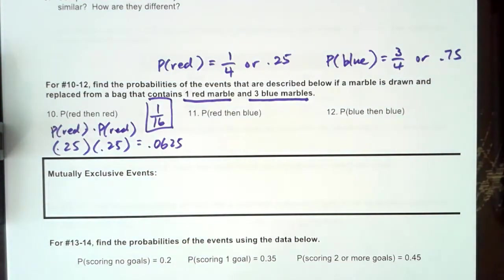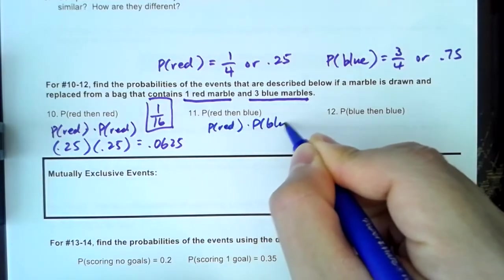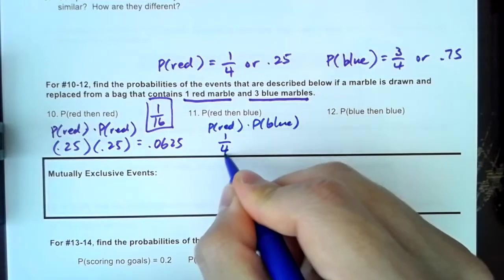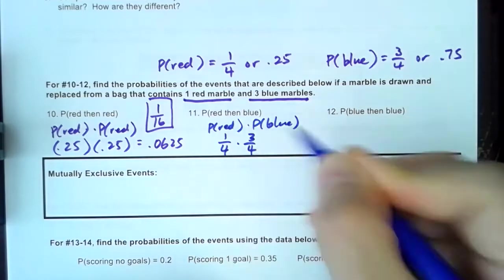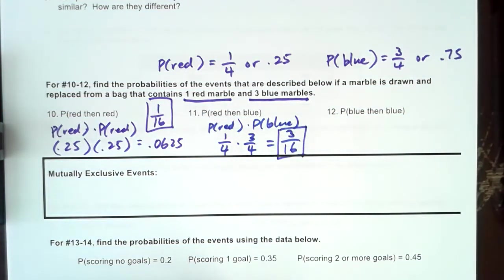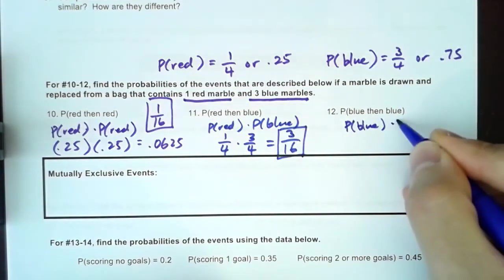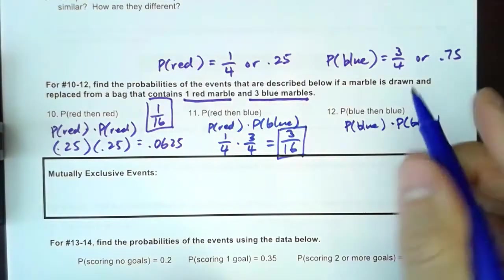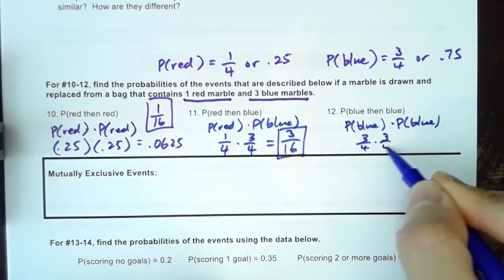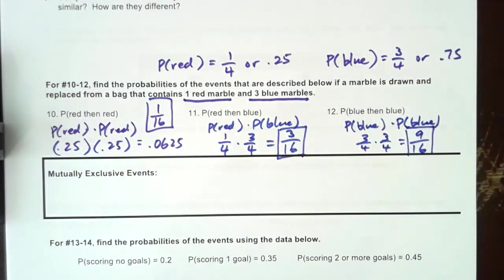Probability of red then blue is probability of red times probability of blue, which is 1 fourth times 3 fourths, giving 3 over 16. And then probability of blue then blue is 3 fourths times 3 fourths, giving 9 over 16. So you have a decent chance of getting two blues in a row — which makes sense because there are more blues in the bag.